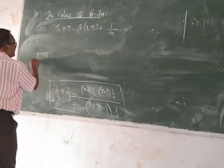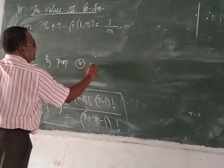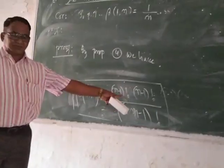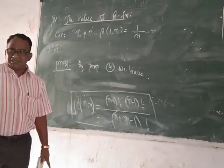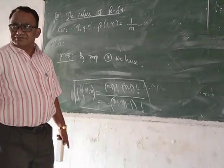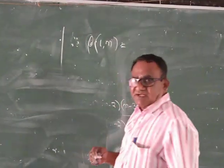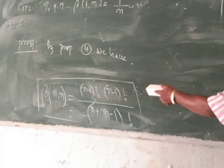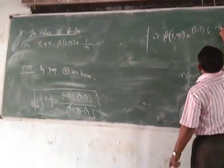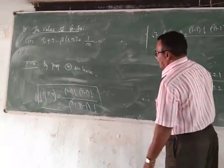By property 4, we have β(m,n) = (m-1)!(n-1)! divided by (n+m-1)!. Now let us replace m by 1 everywhere. So β(1,n) becomes: substitute m=1 to get (1-1)! · (n-1)! divided by (n+1-1)!.